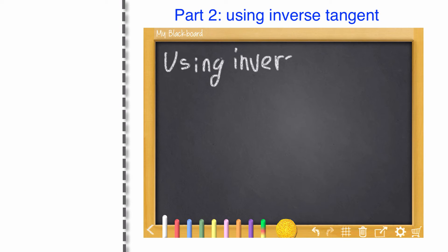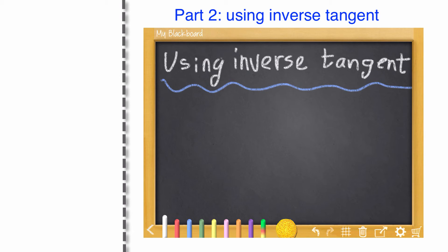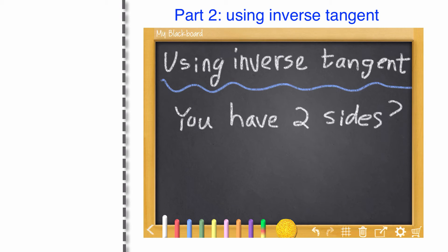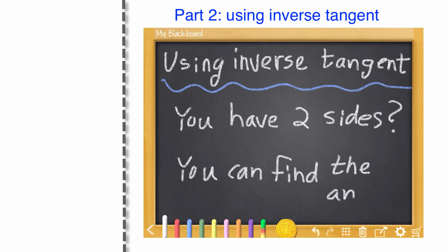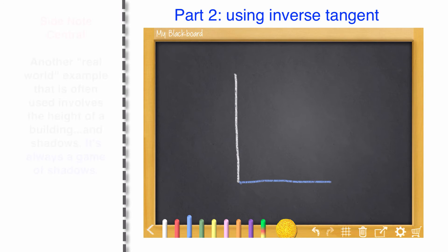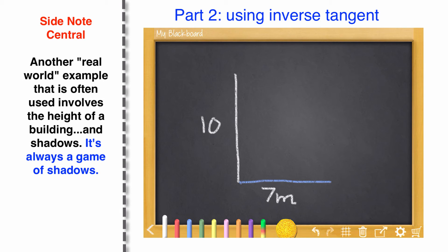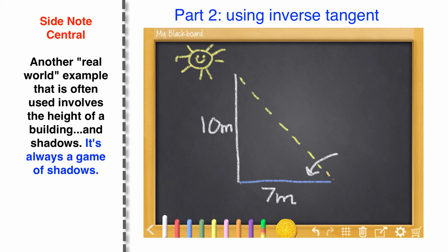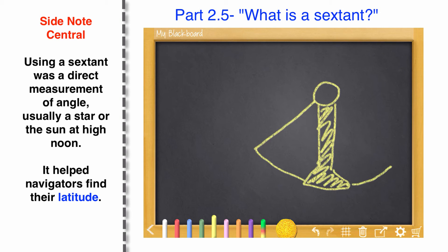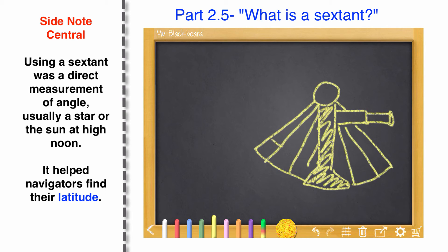Now let's take a look at using inverse tangent. A few minutes ago I said that if you had two sides of a triangle, you could find the angle — it's sort of like working backwards. So we're going to use inverse tangent for this problem. Here's the question: it's a 'what angle is the sun' kind of problem that comes up a lot.